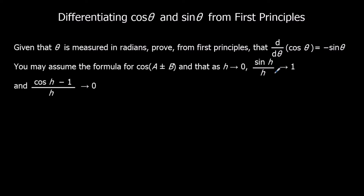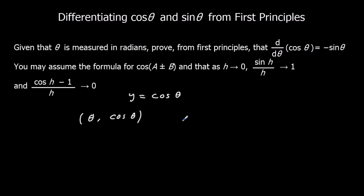So we're differentiating cos theta. We have y = cos theta. We write down our coordinates: when theta equals theta, y equals cos theta. Then we move a tiny bit along from theta — we change theta to theta plus a small amount h. So when theta is theta plus h, y is cos(theta + h).